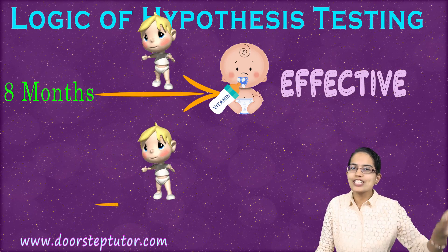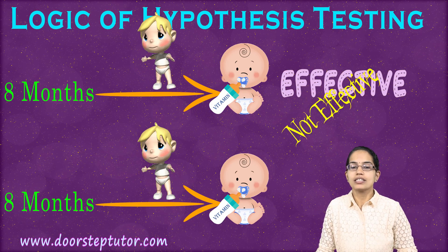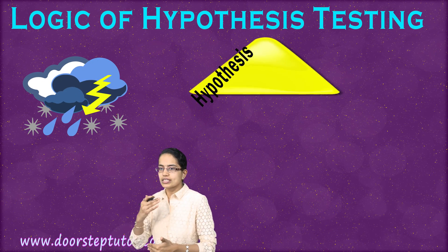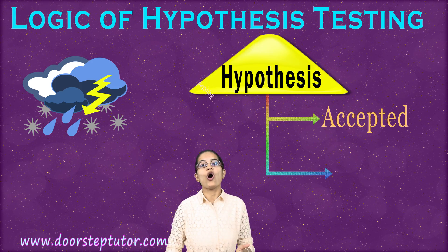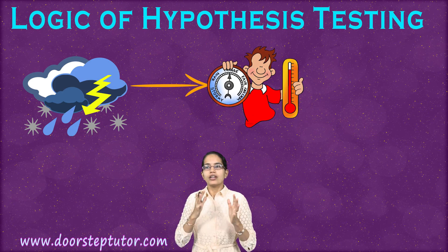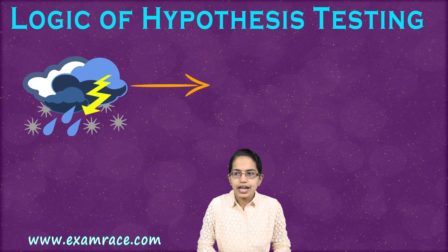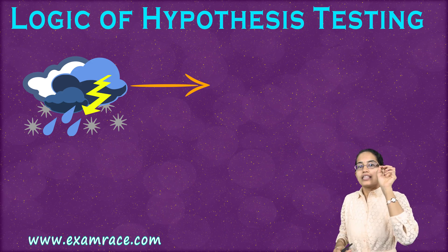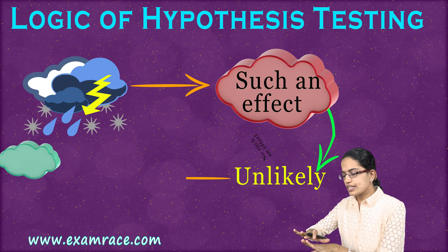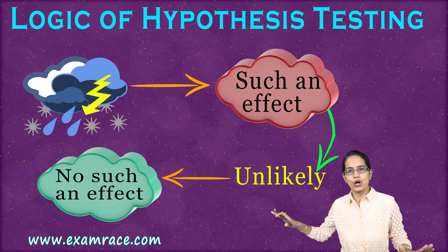If the babies do not start to walk at 8 months, that means the vitamin dose given is not effective. So what we are trying to understand is whether the hypothesis that comes in is accepted or rejected — whether we are focusing on a research proposition or talking about a null hypothesis, which we will understand shortly. What we are trying to decide is whether there is such an effect; if it is unlikely, then there is no such effect. So we are trying to find out whether the vitamin has an effect or does not have an effect.